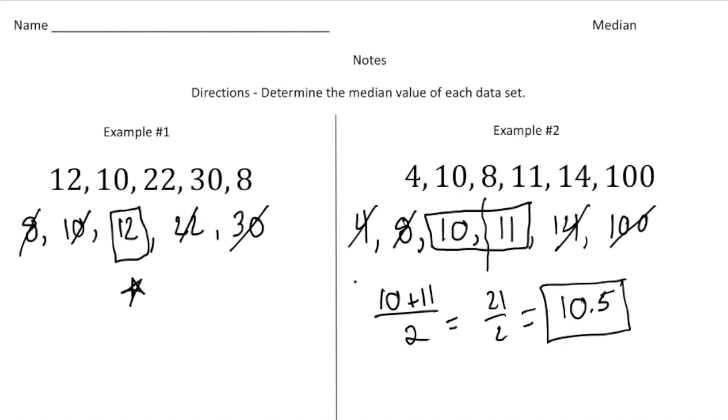So again, when you have an odd number of numbers, it's easy. It's just going to be one exact number, but when you have an even amount, you have to take the average of the middle two numbers to get the median. So pause the video and try the your turn now problems and when you're done, hit play. You can see how you did. Good luck.